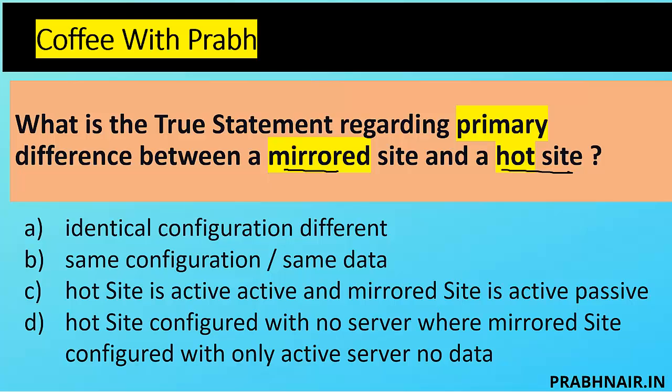We're eliminating B, C, and D based on the features. B says same configuration and same data — that is a false statement because the data differs between the two sites. C states hot site is active-active and mirror site is active-passive — that is a wrong statement. D says hot site is configured with no server where mirror site is configured with only active server and no data — completely wrong. Going with A: hot site has a different configuration because it is configured with only a server, while mirror site has the same full configuration including data.